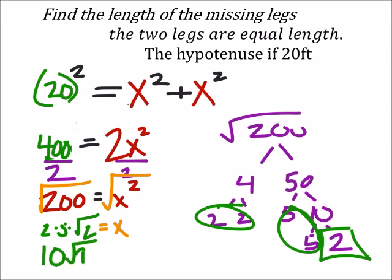And 2 times 5 is 10. So I've got 10 times the square root of 2 equals our x. And yes, this is in feet.